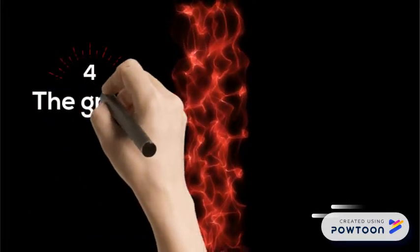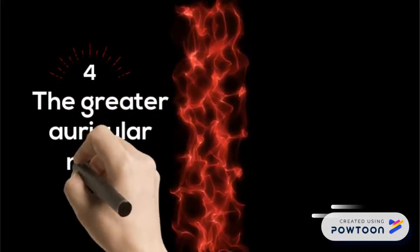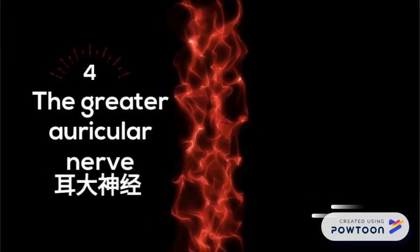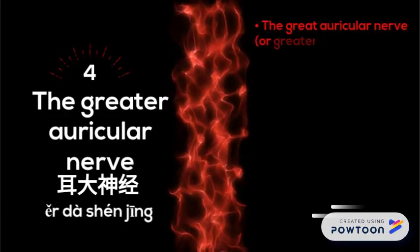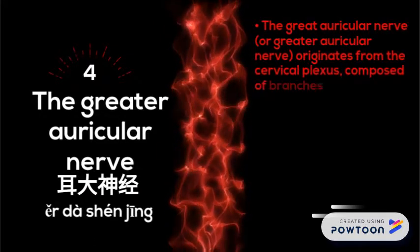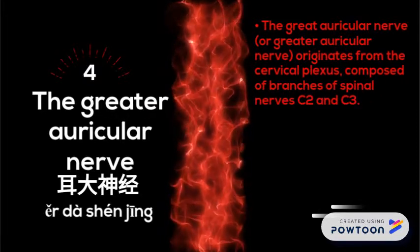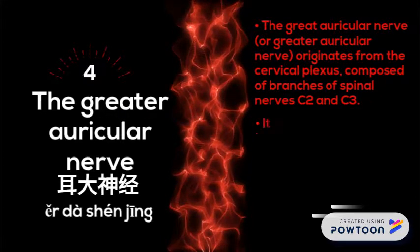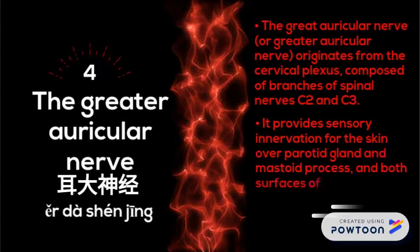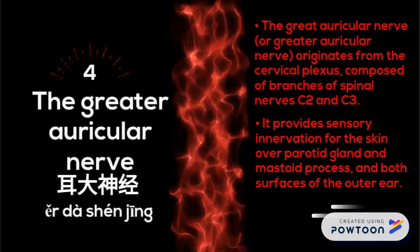The greater auricular nerve, er da shen jin. The great auricular nerve originates from the cervical plexus, composed of branches of the spinal nerves C2 and C3. It provides sensory innervation for the skin over the parotid gland and mastoid process, and both surfaces of the outer ear.